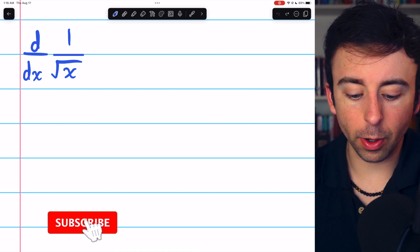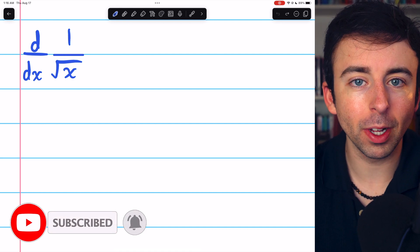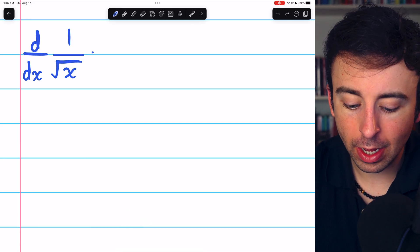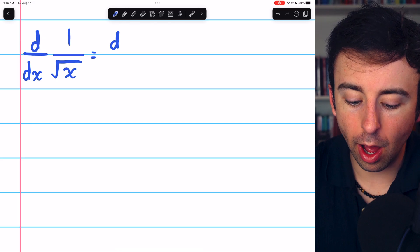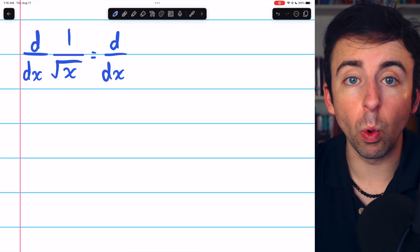The derivative of 1 over the square root of x is a simple power rule problem. You just have to remember how to rewrite this as a power. Let's begin with the fact that the square root of something is the same as the power of 1 half.